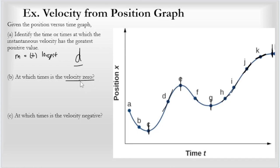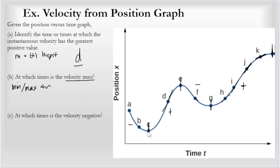At which times is the velocity zero? The slope is negative in one region, positive here, negative here, positive here. There are points where it changes from negative to positive or positive to negative — those are the min or max. Setting the derivative equal to zero finds those points. The slope of the tangent line is zero at point C, at point E, and at point L. So velocity is zero at C, E, and L.